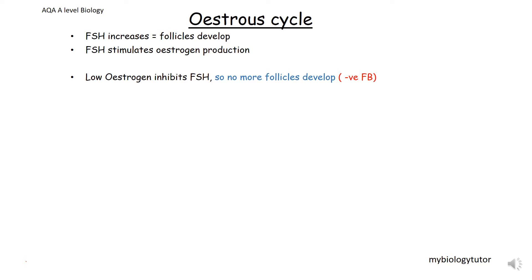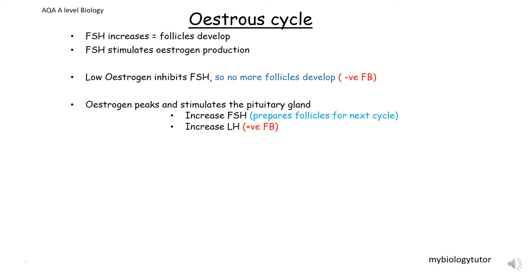And this is an example of positive feedback. So as the oestrogen levels peak, this stimulates the pituitary gland to actually then increase the FSH and also to increase the LH. These are both examples of positive feedback.